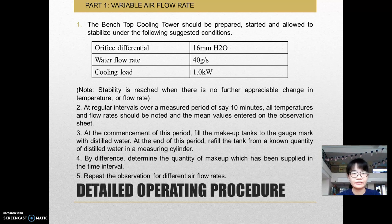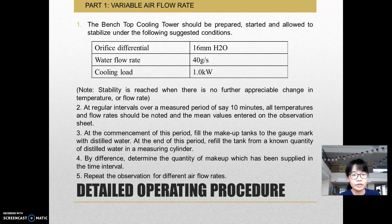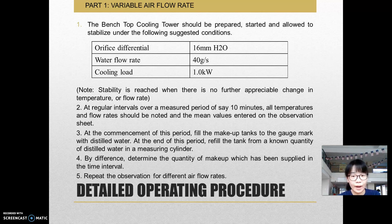The experiment is conducted and divided into three parts. For Part 1, it is related to variable airflow. For the operating procedure, firstly, the bench top cooling tower should be stabilized under the suggested cooling conditions — for example, the orifice, the heater settings. For water flow rate, it should be adjusted to 40 grams per second, and the cooling heater should be adjusted to 1 kW.